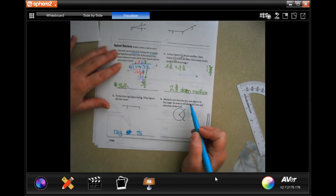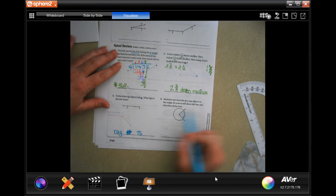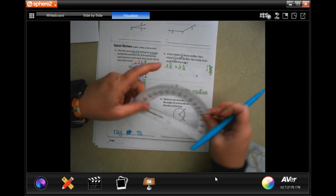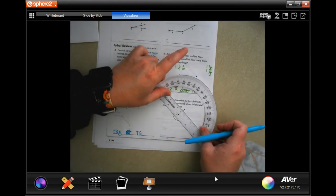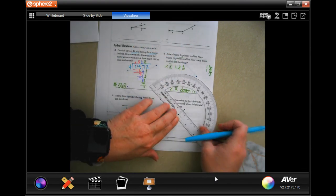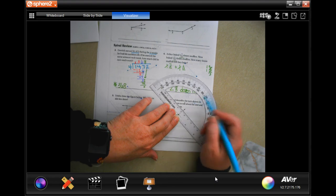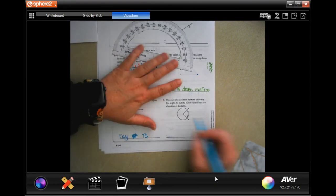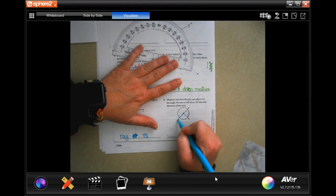Measure and describe the turn shown by the angle. Be sure to tell about the size and the direction of the turn. Okay, well the size, let's start there. So it's right at 90 degrees.